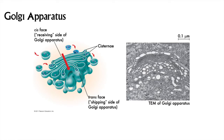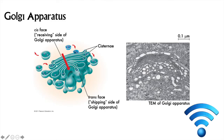The Golgi apparatus has distinct faces: a receiving face, usually facing the nucleus and the ER, and a shipping face, wherein vesicles with the finished products are released. The receiving face is called the cis face — think 'same side as the nucleus.' The shipping face is the trans face, away from the nucleus. The entire structure tends to be curved, kind of looking like a sloppy Wi-Fi symbol with the cis face on top and the trans face below.